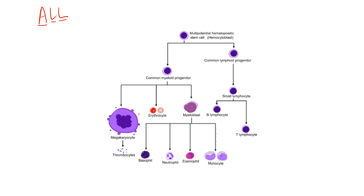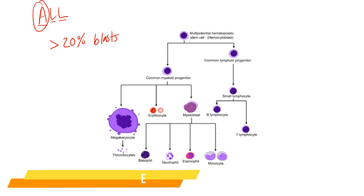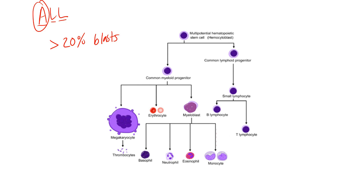First, what is ALL? ALL stands for acute lymphoblastic leukemia. In acute leukemias, they are defined by the presence of blasts. Blasts are just the precursor cells — in ALL we're talking about lymphocytes. The 'blastic' in lymphoblastic means it is a precursor before you actually get to the final form of the cell.